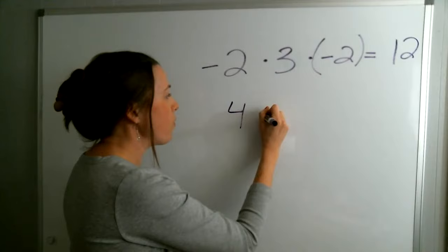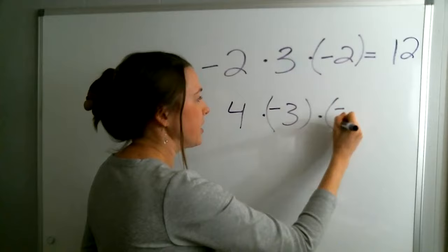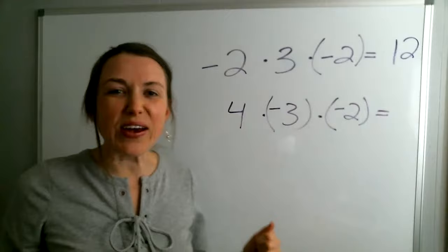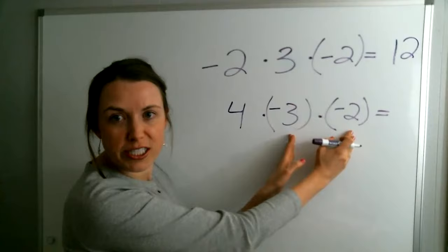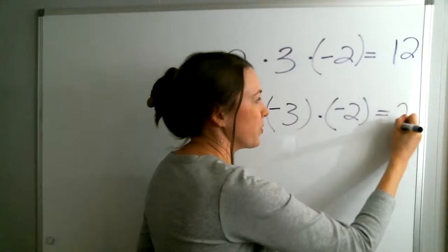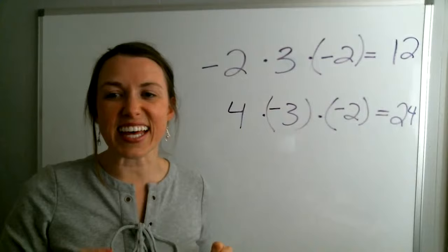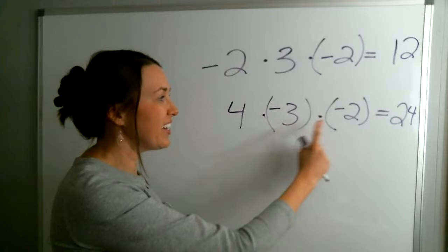Let's do another: four times negative three times negative two. I'm going to go three times two, which is six, and then six times four is 24. So we're going to go 24 — now we have to decide, is it positive or negative? We have one negative and another negative — they come together and make it positive. The answer is positive 24.